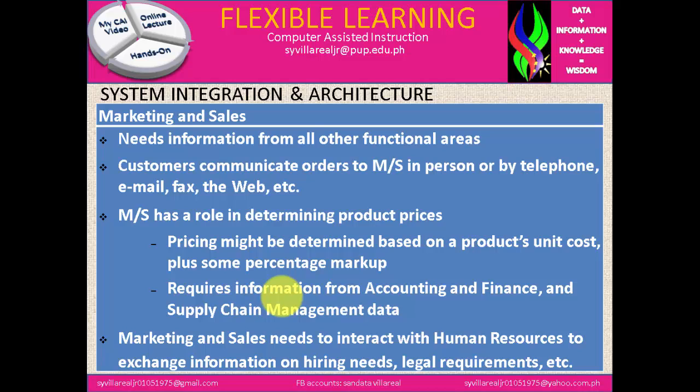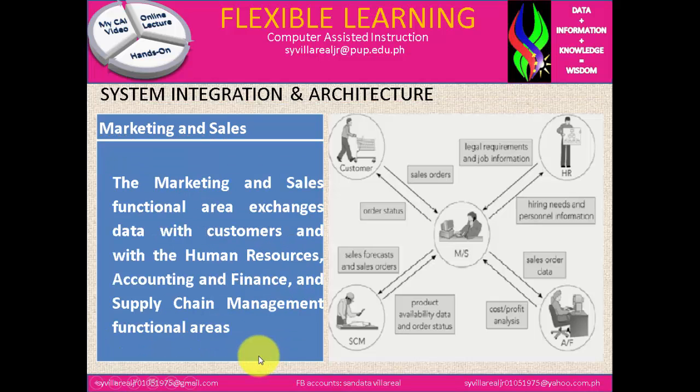Marketing and sales has a role in determining product prices — pricing might be determined based on the product unit cost plus some percentage markup. This requires information from accounting and finance and supply chain management data. Marketing and sales also needs to interact with human resources to exchange information about hiring needs, legal requirements, etc. The marketing and sales functional area exchanges data with customers and with human resources, accounting and finance, and supply chain management functional areas, as shown in the figure — with marketing and sales at the center, connecting to customers, HR, accounting and finance, and SCM.